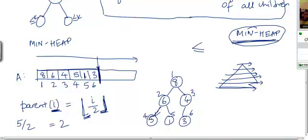So the parent of the fourth item is going to be the second item. The parent of the fifth item is going to be the second item. The parent of the third item is going to be the first item because 3 divided by 2 is 1.5 and the floor of that is 1. Is this clear?